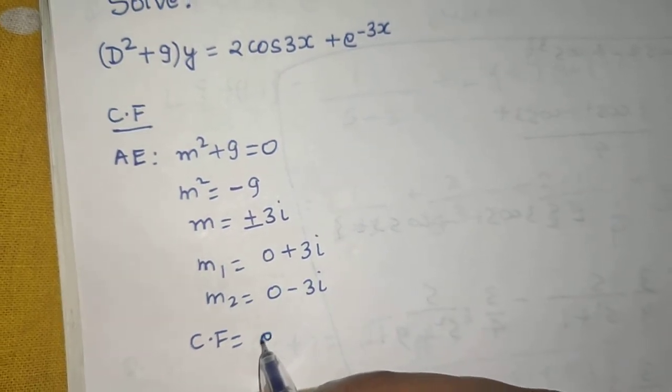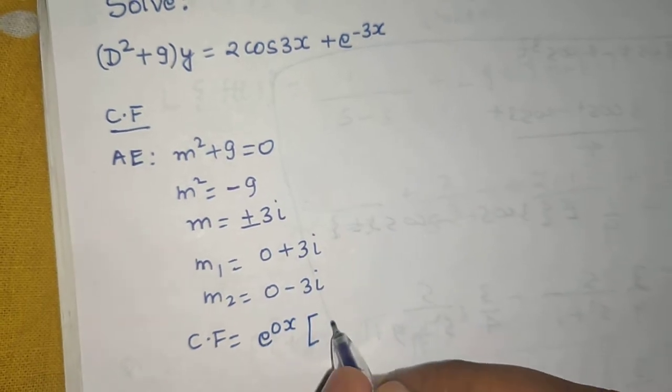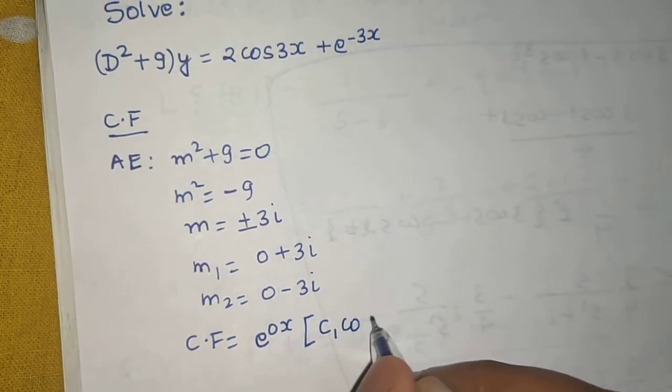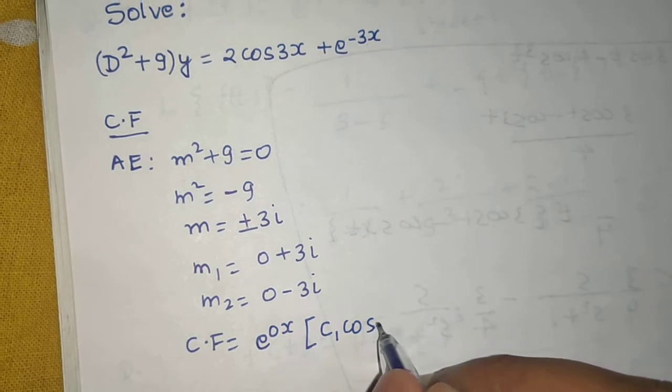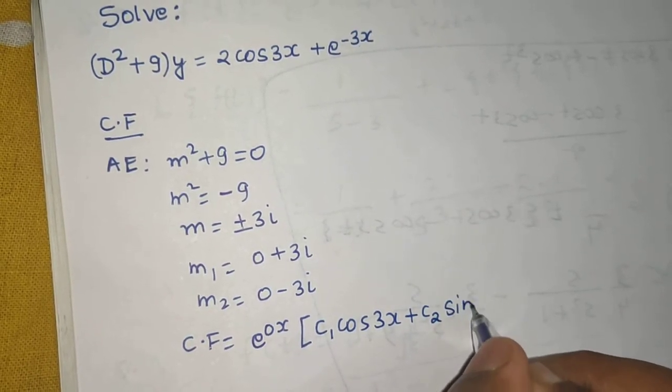A here is 0, so e power 0x inside c₁ cos of bx. b here is 3, so cos of 3x plus c₂ sin of 3x.